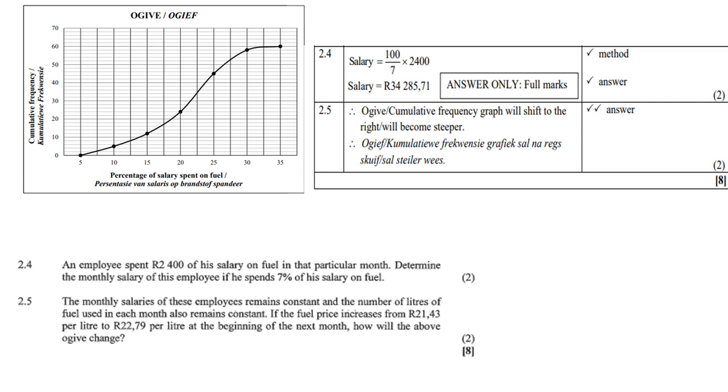2.5, the monthly salary of these employees remains constant and the number of liters of fuel used in each month also remains constant. Now if the fuel price increase from 21.43 per liter to 22.79 per liter at the beginning of next month, how will the above ogive change? Well, it's clear that the cumulative frequency graph will shift to the right. So it will become steeper.